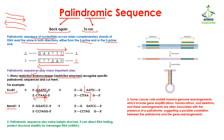Similarly, another restriction endonuclease is BamHI. BamHI recognizes the sequence G-G-A-T-C-C from one strand, and again G-G-A-T-C-C if you read it from the other strand. It cuts the sequence here and here. So restriction endonucleases recognize the palindromic sequence from the upper DNA strand as well as the lower DNA strand and then cut it. We can use this cut DNA for cloning purposes.